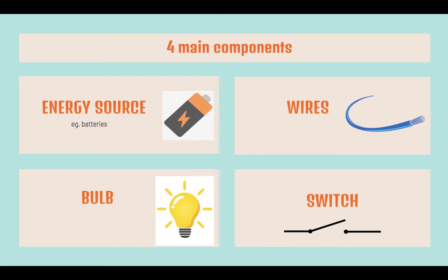There are mainly four components: specifically the energy source, wires, an electrical device like a bulb, and the switch.